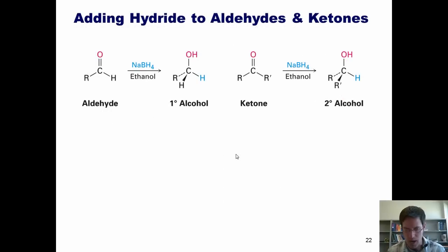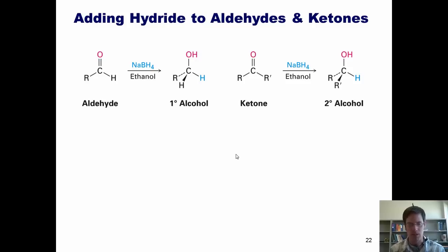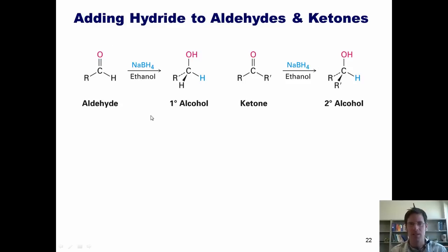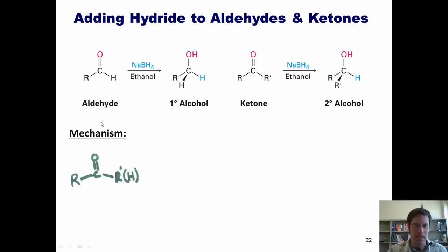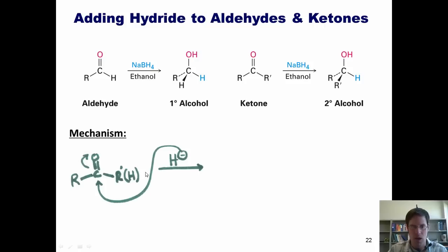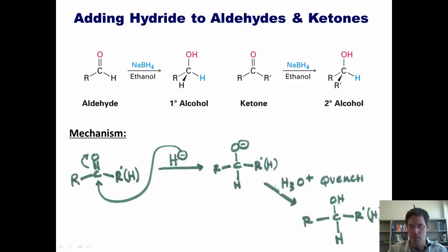We'll now turn to the addition of hydride, or H-minus, to aldehydes and ketones. These hydride reactions are all reducing reactions because they decrease the starting material's total number of bonds to oxygen by adding hydrogen atoms. They're very analogous to Grignard additions—the only difference is adding H-minus instead of R-minus. Starting with an aldehyde or ketone and treating with H-minus from sodium borohydride, the hydride comes in and attacks the carbonyl carbon, generating an alkoxide intermediate that is protonated in the workup to give a primary alcohol from an aldehyde or a secondary alcohol from a ketone.